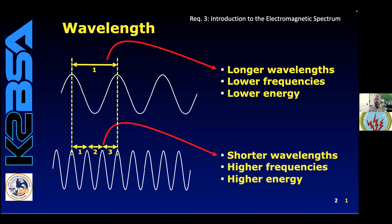What would the wavelength be for one Hertz? It's 186,000 miles. Ten Hertz is 18,600 miles. What about 100 Hertz? That is 1,860 miles.